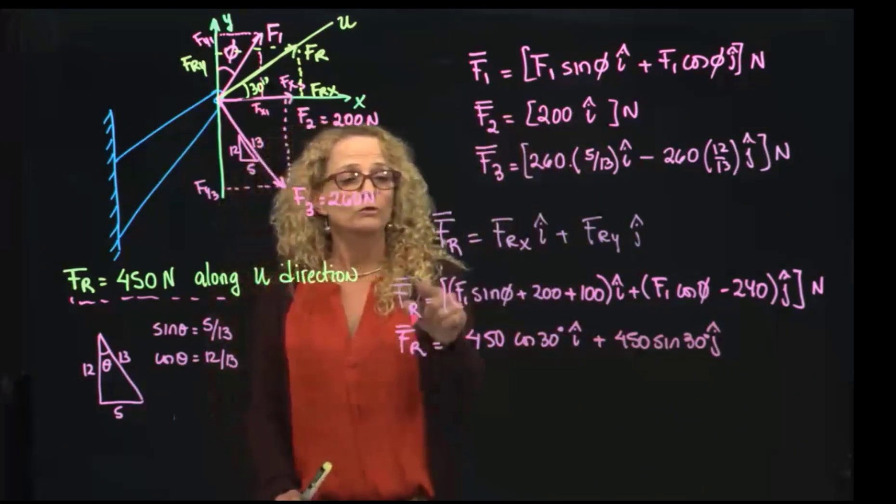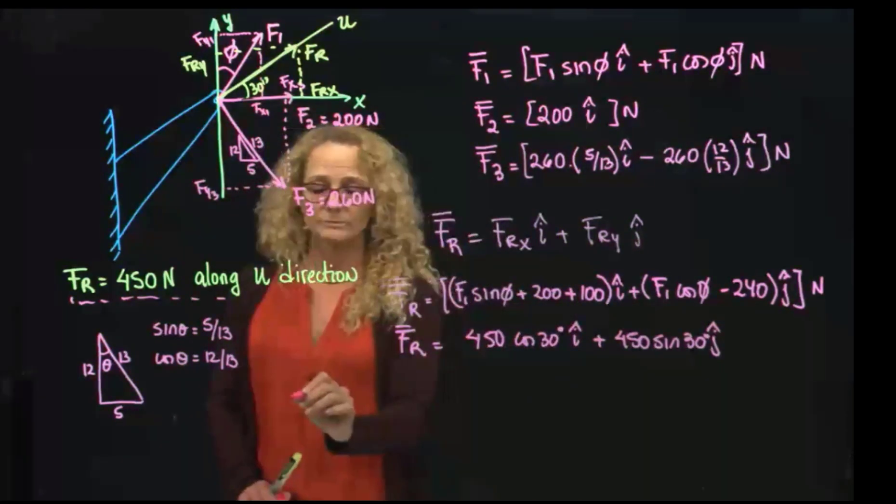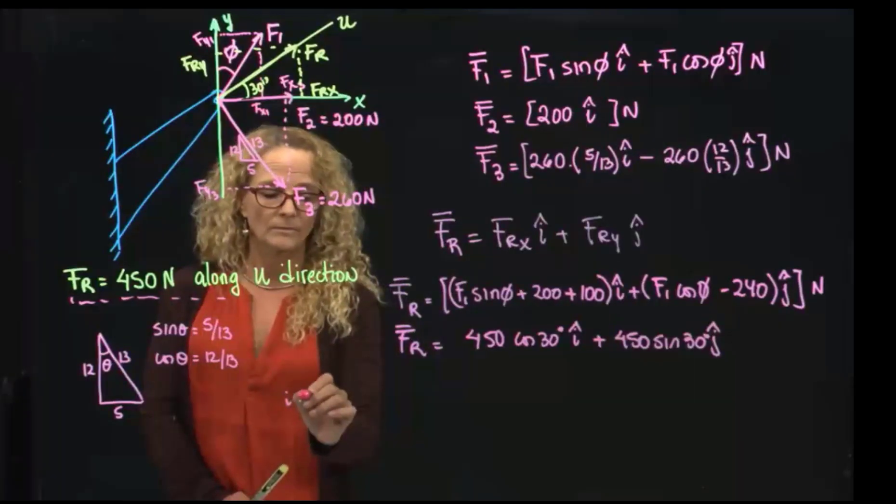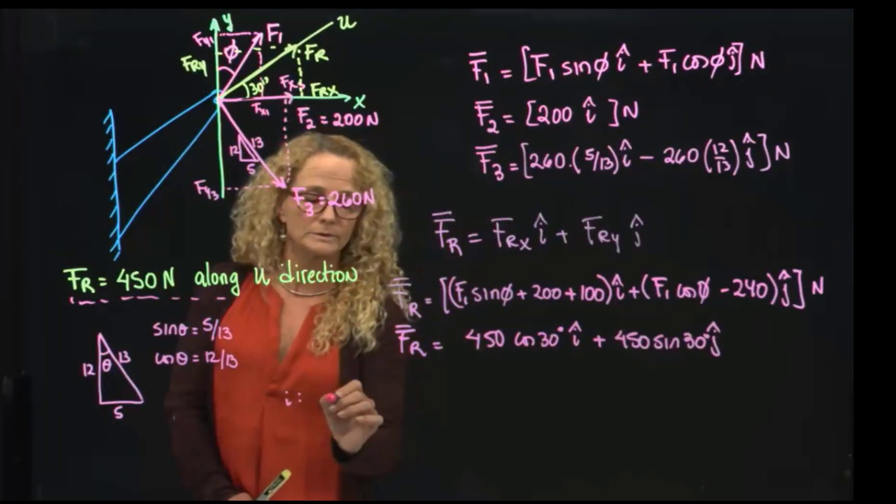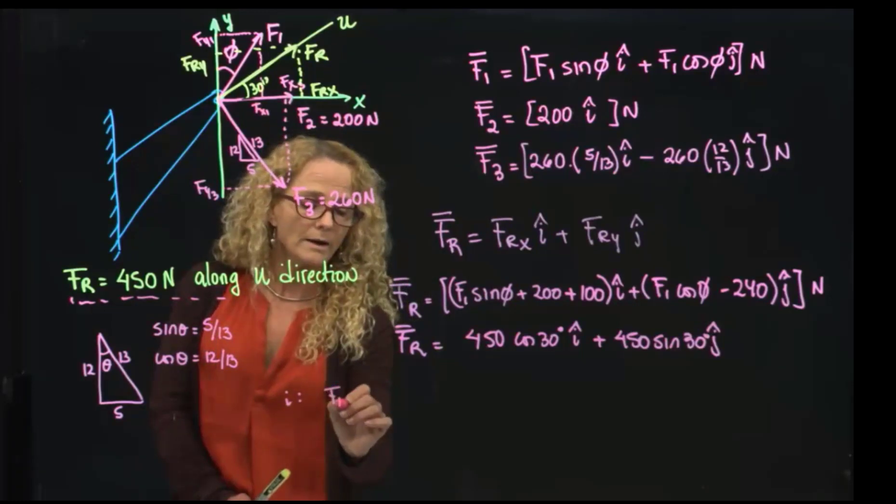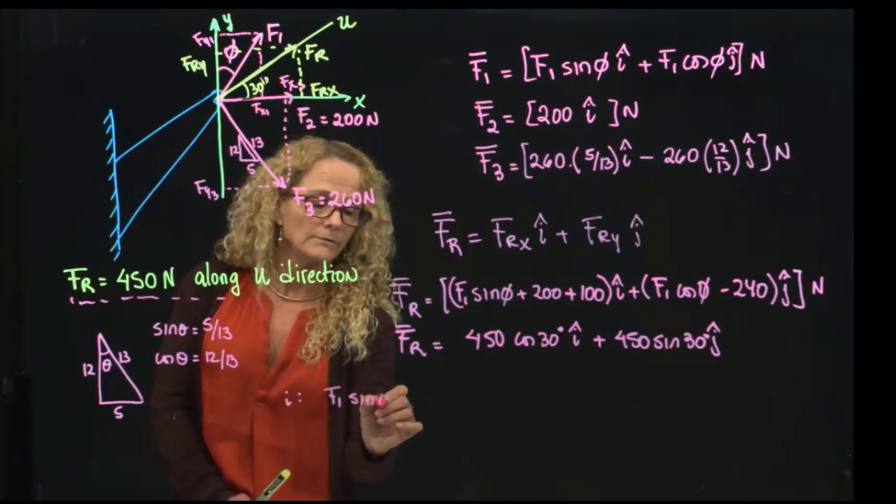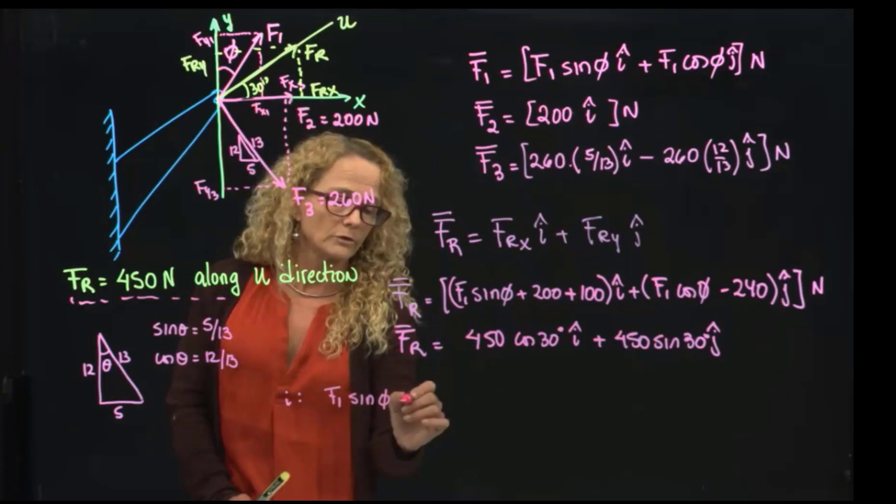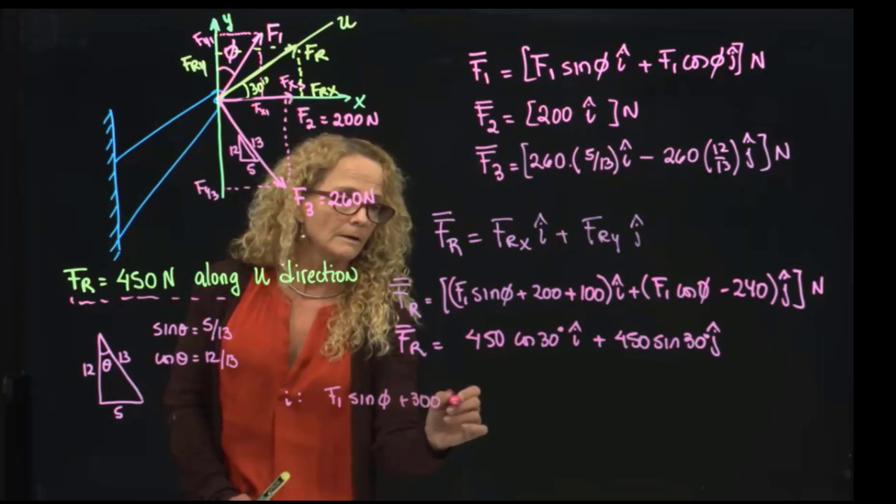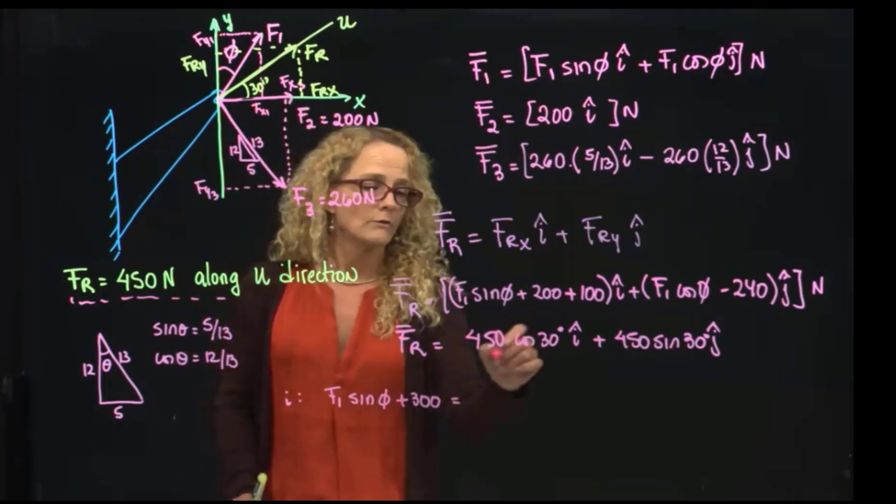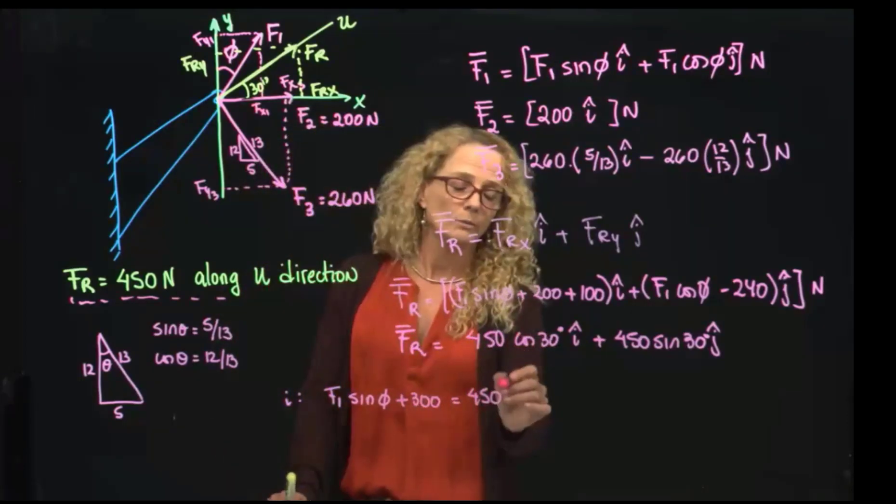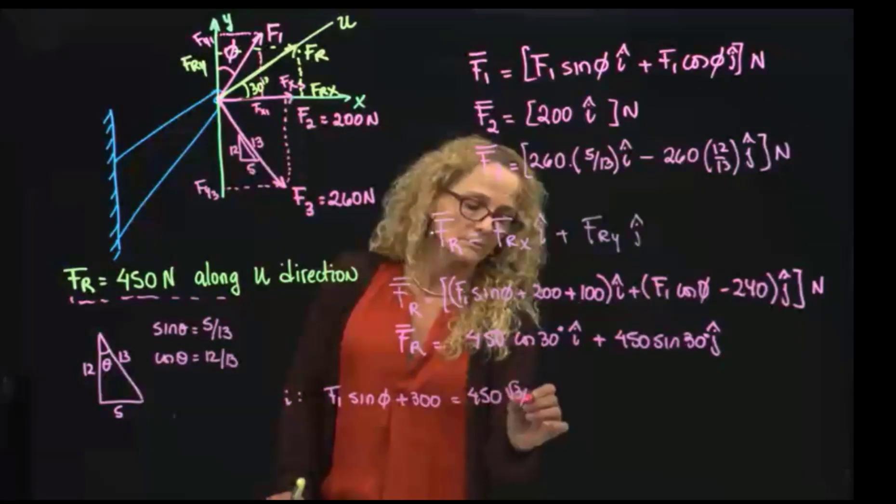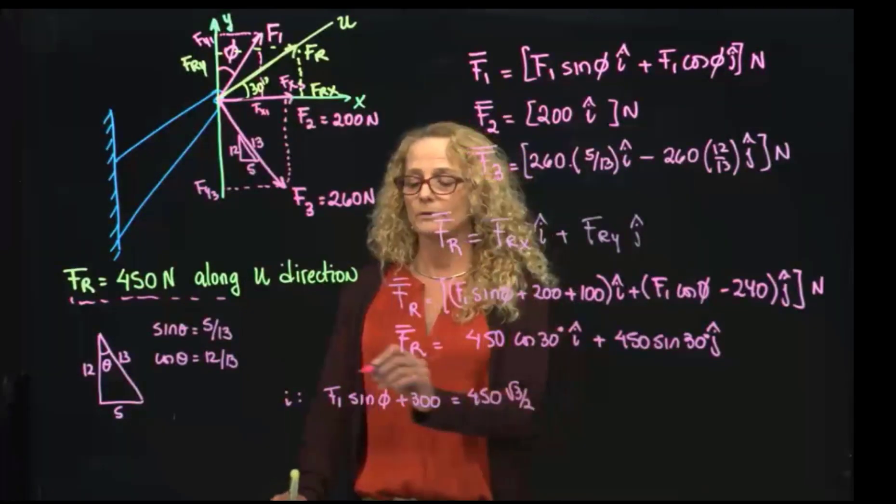Okay, so we will make those two equal. In I-direction, I can say that this over here equals that over here. So I would say this is F1 sine of phi plus 300 equals 450 cosine of 30, which we know is square root of 3 over 2. So we have this first equation.